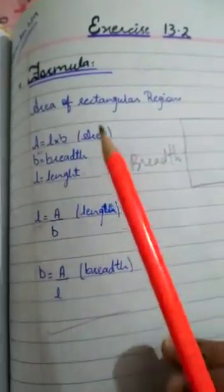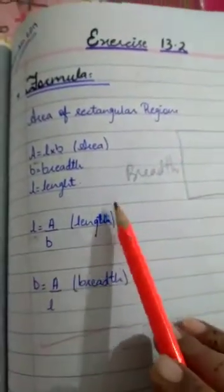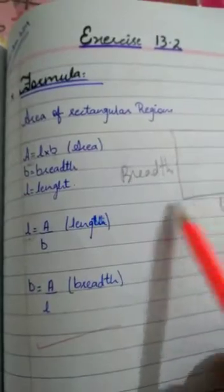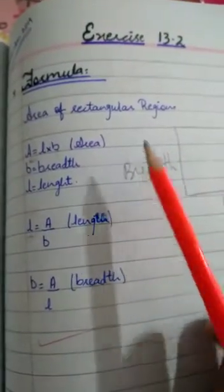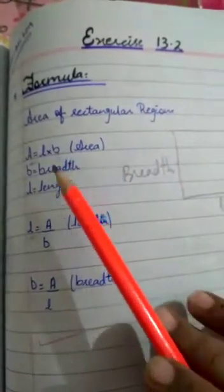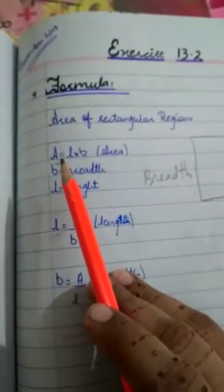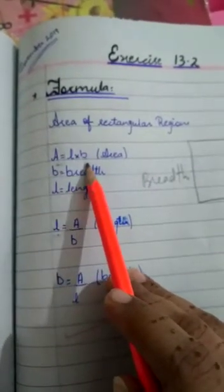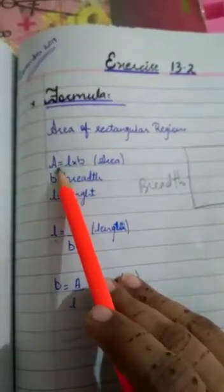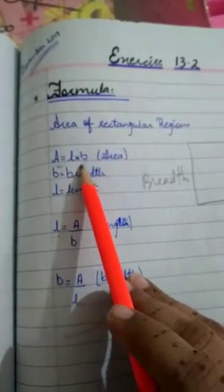Now in this exercise, we learn about the area of rectangular region. There is a rectangular region in which an area is given, breadth and length is given. When we apply the formula, the formula is A equals L times B. A is denoted by area, L is length and B is breadth.